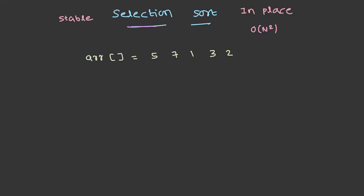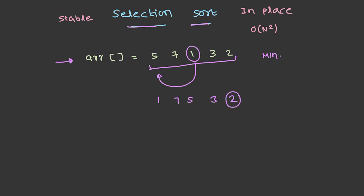Let's try to understand selection sort. Suppose we have this array — selection sort looks for the minimum element among all existing elements. It finds the minimum element, which here is 1, and 1 will be replaced at the initial index; both elements will be swapped. Similarly, it repeats the process and searches for the next minimum element, which is 2 in this case. The process repeats and 2 will be placed at the first index. In the same way, the entire array will be sorted, and the final state of the array will be this.